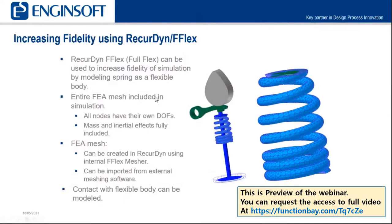We now move on to increasing the fidelity of the spring modeling. We can do this using Recurdyne FLEX, which is short for full flex. What we can do here is mesh the spring geometry as a flexible body using finite element analysis techniques. In full flex, all the nodes have their own degrees of freedom, and the mass and inertial effects are fully included in the model.